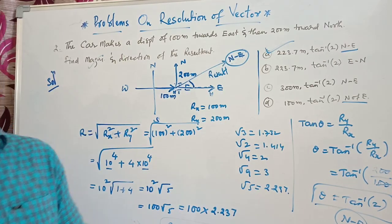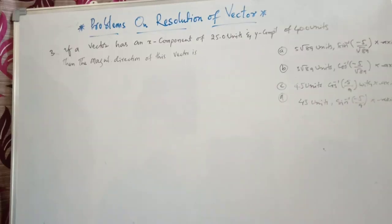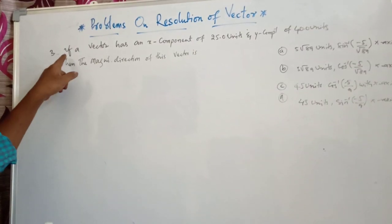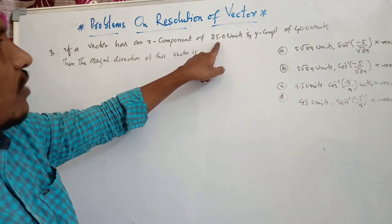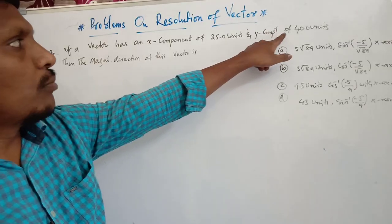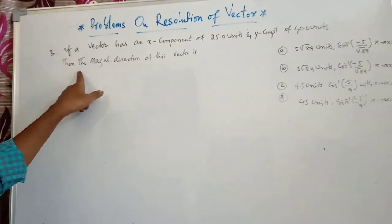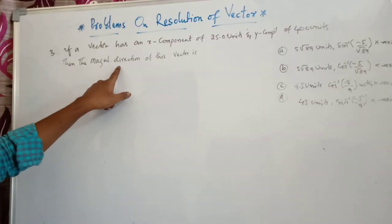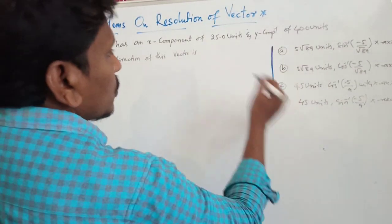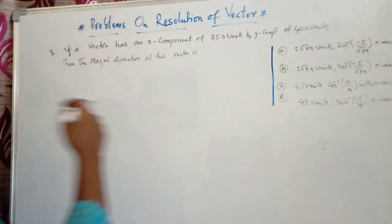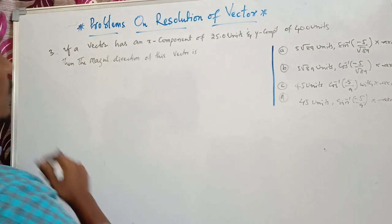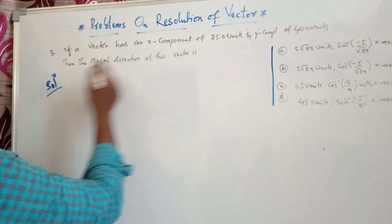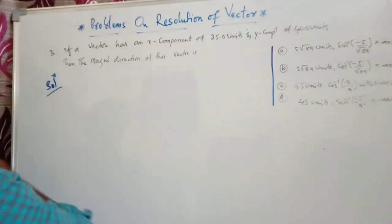Now let us see the third question. If a vector has an X component of 25 units and a Y component of 40 units, then find the magnitude and direction of this vector. Four options are given. Let us solve the problem first, then go through the options.